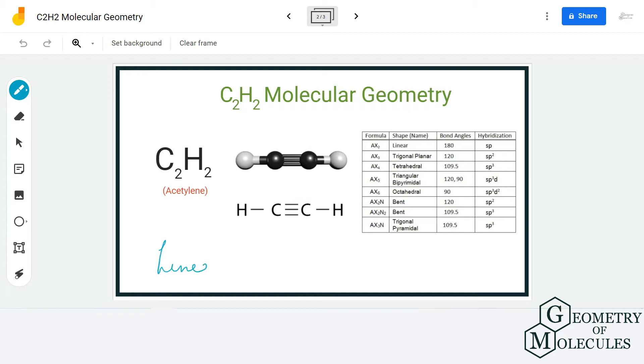If not that, you can also use the AXn notation method to find out what is the molecular geometry of any molecule. If you use the AXn notation method, we are going to consider this carbon atom as a central atom.